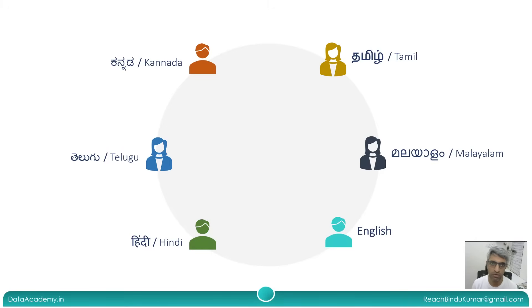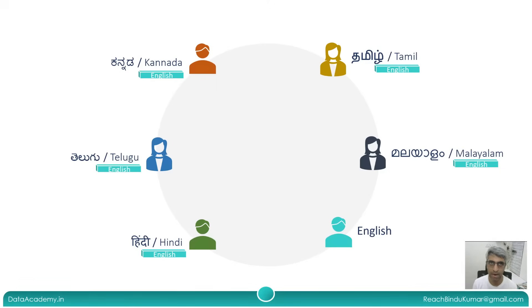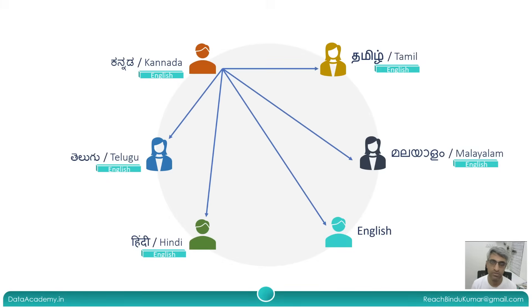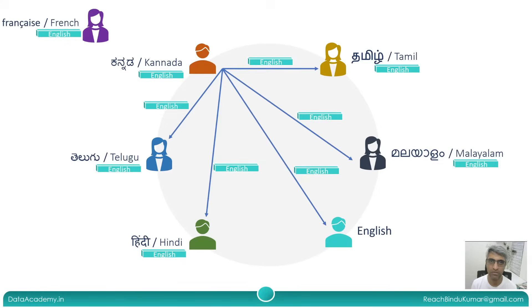So what could be a possible solution? Imagine all of these individuals have one more additional skill that is common between all of them — in this example, it could be English. Now let's take the same scenario where all six members, apart from their native tongue, can speak English as well. This makes communication very easy between every member within the group. And imagine introducing another member who speaks French — if this person also knows English even a little bit, it makes it easy for the existing team members to communicate with this new member.